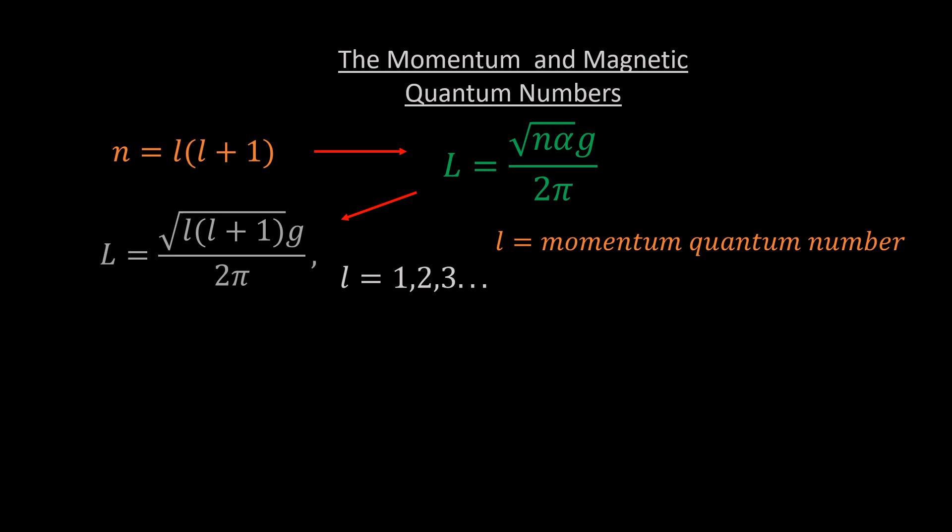Every value of little l also corresponds to a particular value of n according to the relationship. So the corresponding values of n, denoted n subscript l, is given as shown. Notice that these values are different from the n-etas, but they are both values of n.